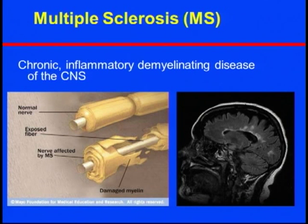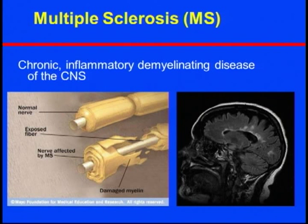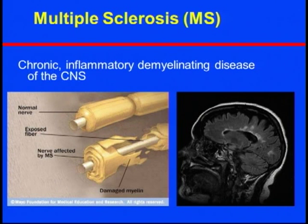Normal neurons wrapped in myelin are shown on top, and demyelinated neurons on the bottom. You can see how demyelination and chronic inflammation can damage different parts of the brain, appearing as white spots on MRI. Depending on where the lesion occurs, one can experience different symptoms.